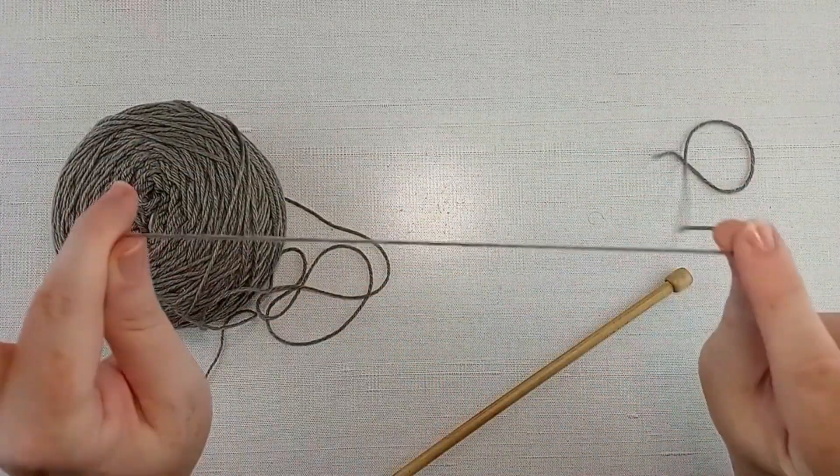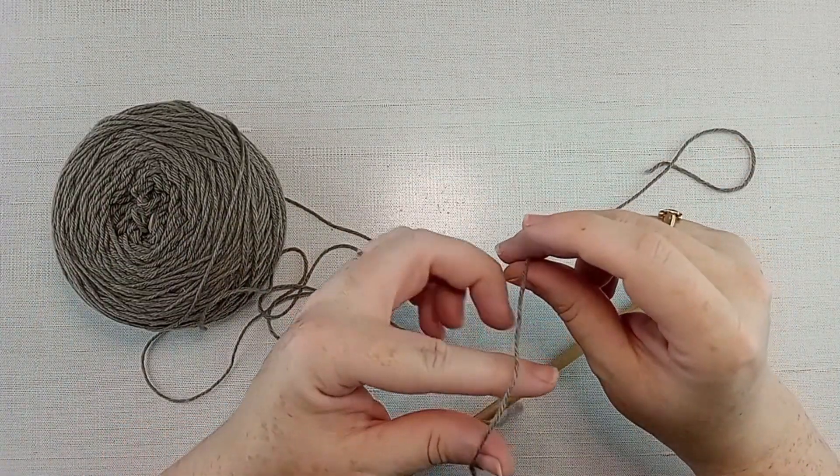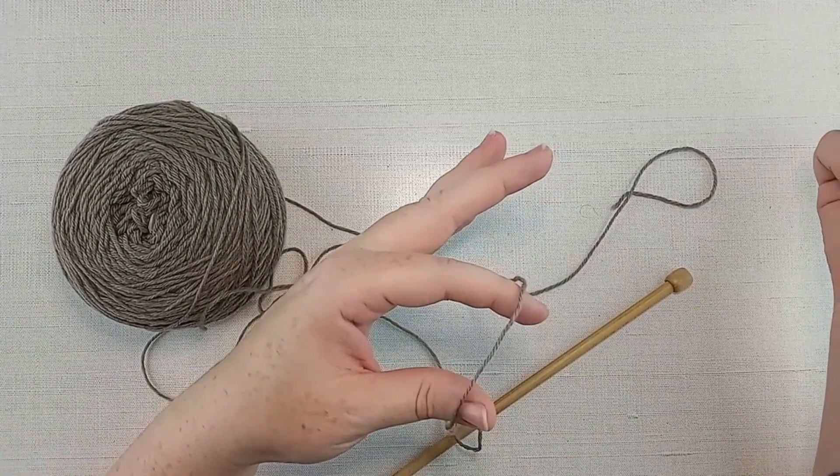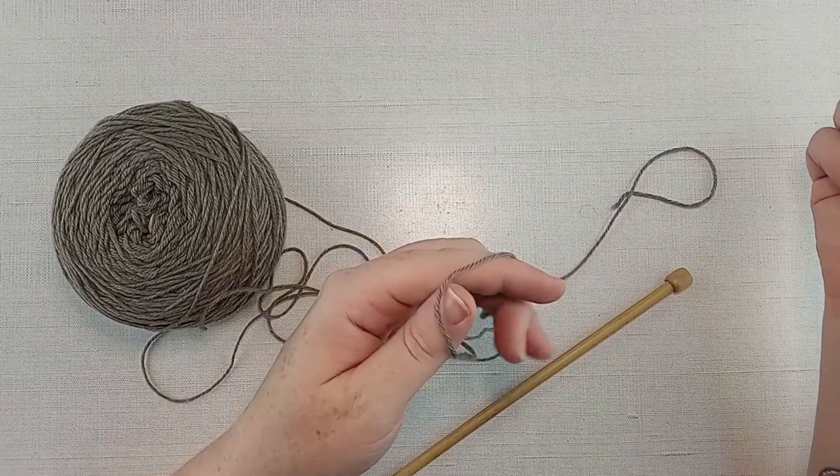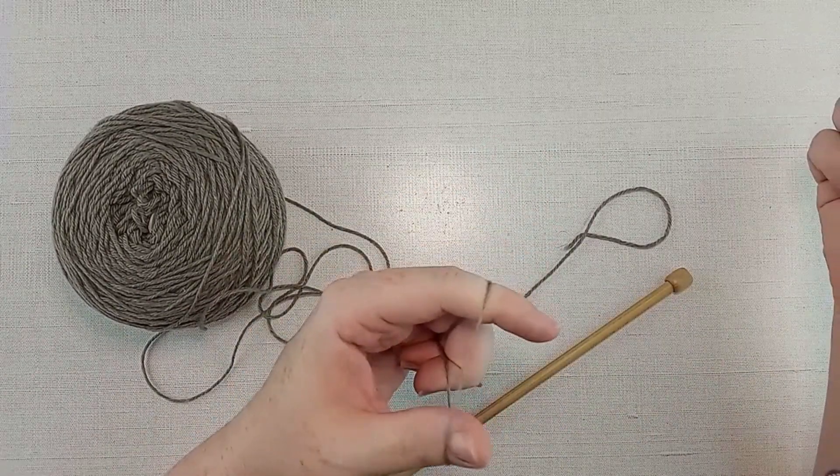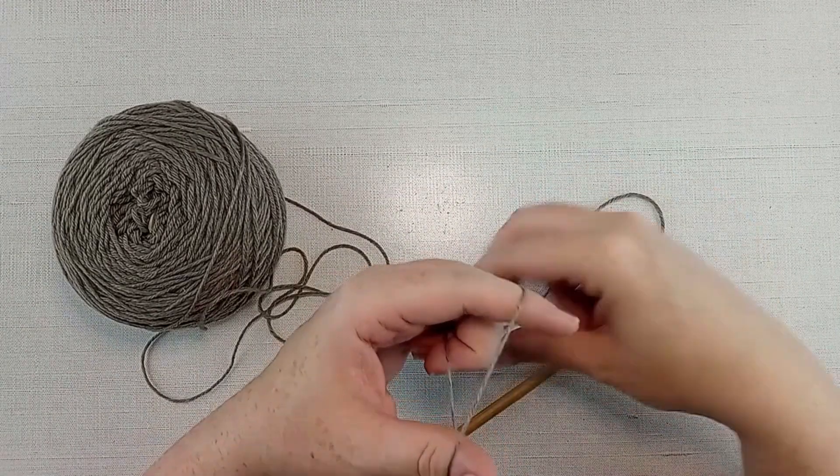To start, I put the tail of the yarn over my first finger and the working yarn is coming off of my thumb. It's hanging down just like that. We're going to grab both of those ends with our other three fingers and hold it pretty snug. You want to keep some tension on there. It's going to help form the stitches later.